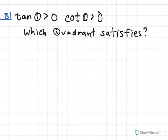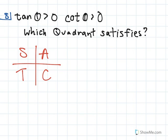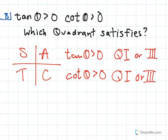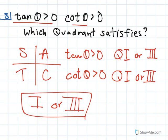In this question, we're told tangent of theta is greater than 0 and cotangent of theta is greater than 0, and we want to know which quadrant satisfies this. In the first quadrant, all trig functions produce positive values. In the second quadrant it's only sine, third only tangent, and fourth only cosine. If tangent of theta is greater than 0, we have to be in either quadrant 1 or 3. Since cotangent is just the reciprocal of tangent, if that's also greater than 0, we're also in quadrant 1 or 3. So quadrants 1 and 3 satisfy both conditions.